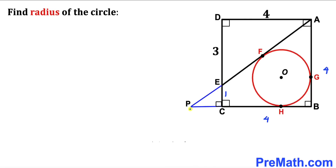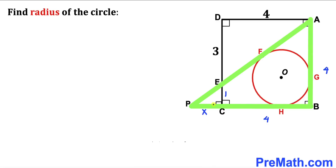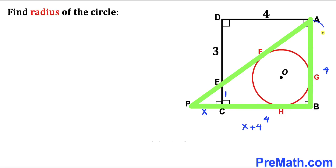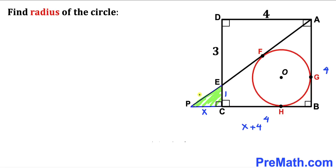Let's assume that side length PC is X units and we are going to find the value of X. Let's focus on the bigger right triangle PBA: its whole side length is X plus 4, and the other side is 4. The tiny right triangle PCE has side lengths X and 1.